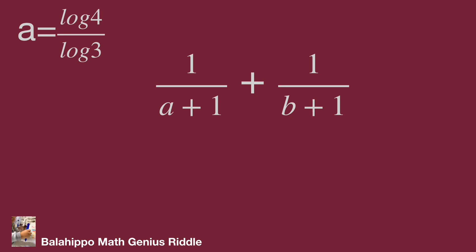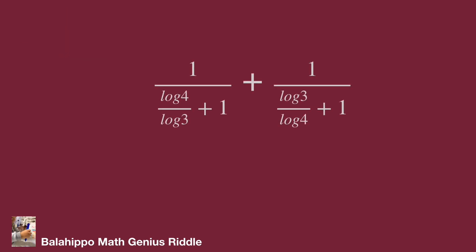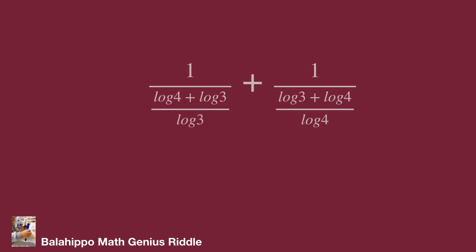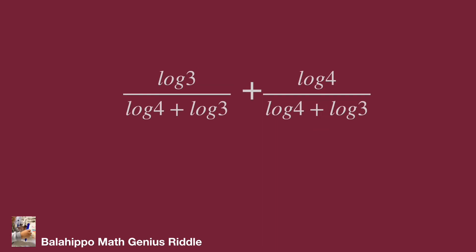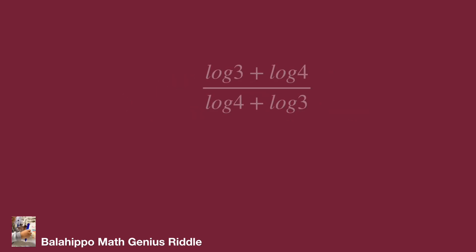Substitute a by log 4 over log 3 and b by log 3 over log 4, giving 1 over (log 4 over log 3 plus 1) plus 1 over (log 3 over log 4 plus 1). Reducing the denominators: 1 over ((log 4 plus log 3) over log 3) plus 1 over ((log 3 plus log 4) over log 4). This simplifies to log 3 over (log 3 plus log 4) plus log 4 over (log 4 plus log 3), which equals (log 3 plus log 4) over (log 3 plus log 4), equal to 1. That's the answer.